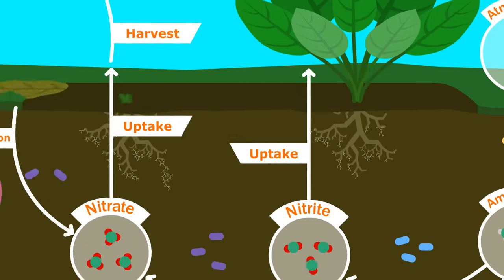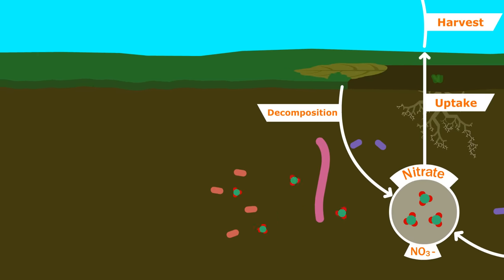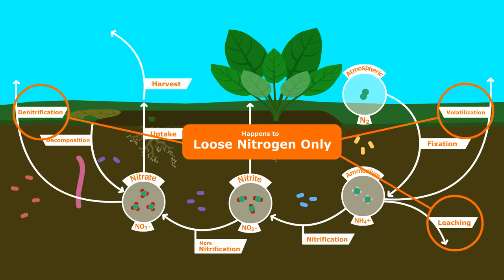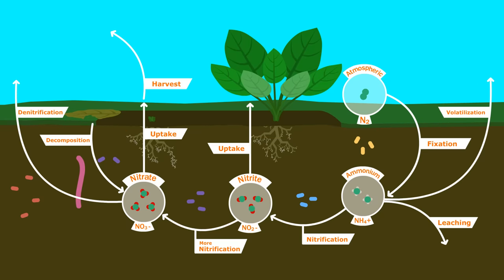Or, if the soil lacks oxygen, different anaerobic bacteria grow, which convert nitrates back into atmospheric nitrogen. Notice that these things only happen with loose nitrogen in the soil, not with nitrogen inside organisms.